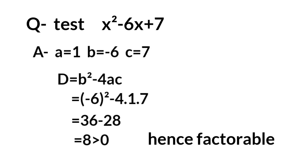D = b² - 4ac = (-6)² - 4(1)(7) = 36 - 28 = 8 > 0. Hence factorable.